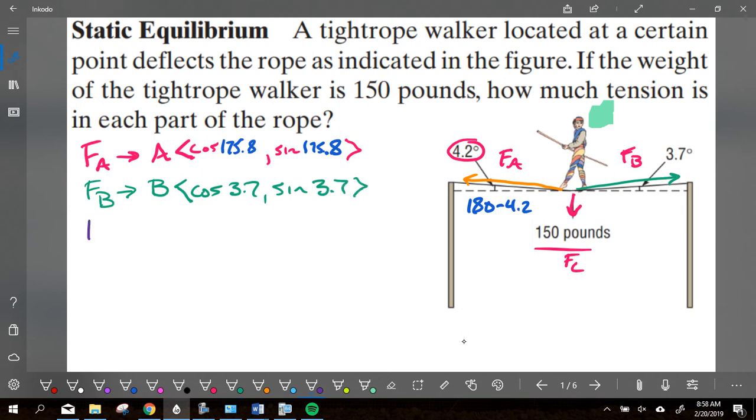And then our third force is gravity. Our gravity force, we could write it out, but it's really easy. It's 150 pounds. What is the X component of that vector going to be? Zero. Gravity doesn't move you left and right. All it does is move you down, and so it's negative 150.